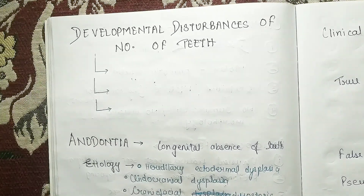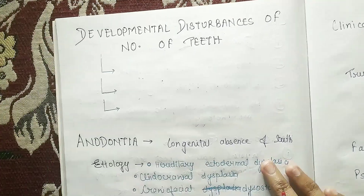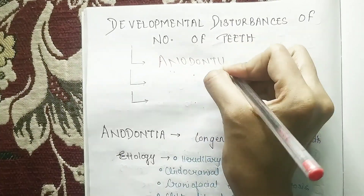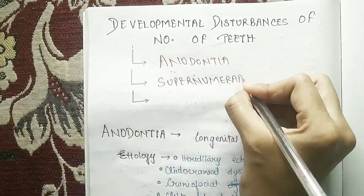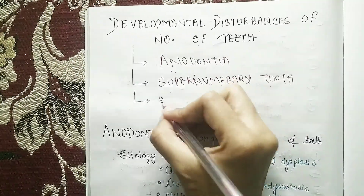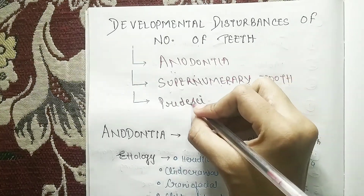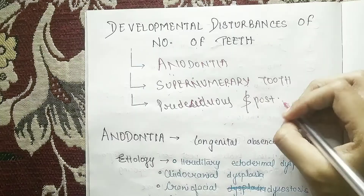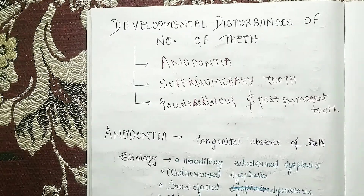Hello everyone, welcome to SAM — Study, Art, Motivation and Education. In this video we are going to start developmental disturbances of number of the tooth. We are going to study only three things: first is anodontia, second is supernumerary tooth, and third is pre-deciduous and post-permanent tooth.